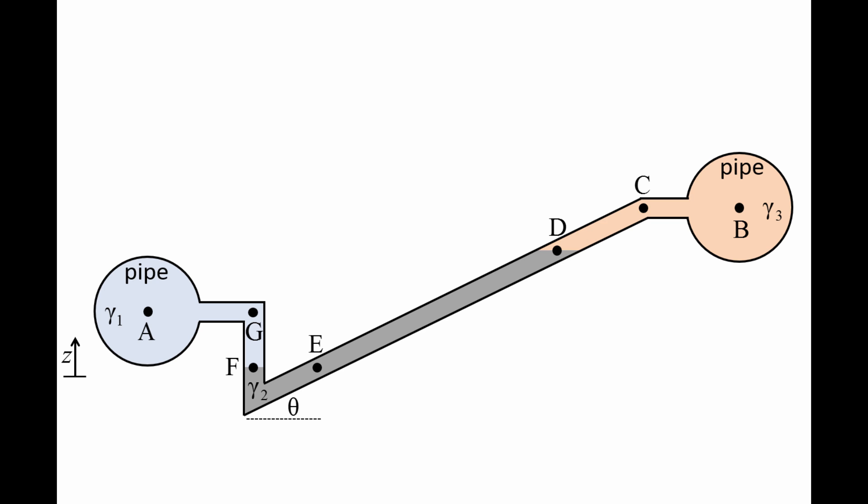Point G is located at the same elevation as point A, and point F is at the interface between fluids 1 and 2. The vertical distance between point A and the interface of fluids 1 and 2 is the height h1.